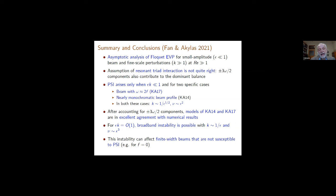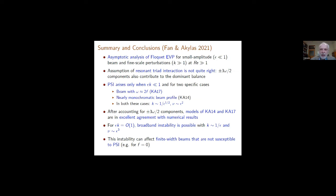The completely new aspect is the possibility of epsilon K of order 1, giving broadband instability with different scalings — the wave number proportional to 1/epsilon and the inverse Reynolds number proportional to epsilon cubed. So we're talking about much shorter and much higher Reynolds number perturbations. For a beam, this instability is very important because it arises in situations where the finite width beam is not susceptible to PSI. For a periodic wave of infinite width, PSI is still there even for f = 0, so the broadband effect is less dramatic. For the beam, it is much more important. Thank you for your attention.